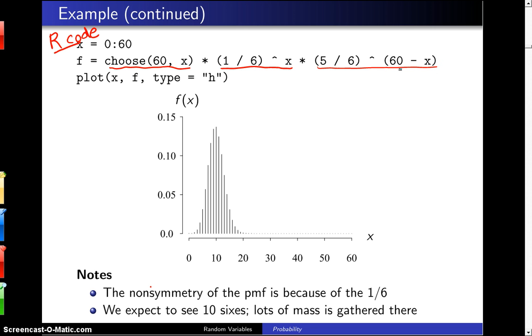And then the third statement plots the probability mass function as spikes because of the type equals H argument.